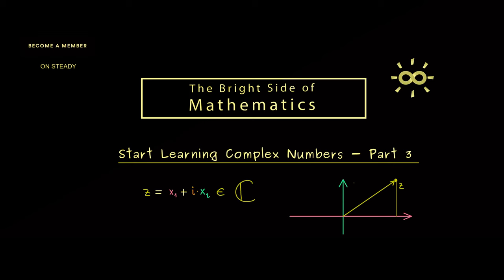So x₁ and x₂ are just ordinary real numbers. And for this reason they get special names. First x₁ is called the real part of the complex number z. And usually it's denoted with Re(z).